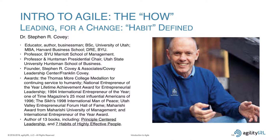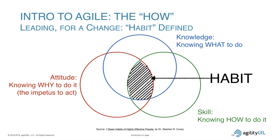Let's talk about habits. Stephen Covey — I had the good fortune of working with him in the mid-80s, before he got seed money from HP, while he was working on 'Seven Habits.' He defined habit as the intersection of three things: knowledge (knowing what to do), skill (knowing how to do it), and attitude (knowing why to do it, which gives you the impetus to act). Where they intersect is where you get habit. The stronger the intersection, the stronger the habit.